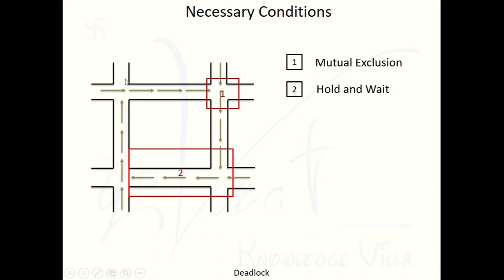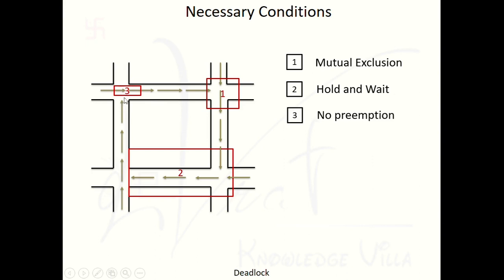For the third case — suppose traffic police arrive and stop a vehicle before it reaches the junction; only then will the junction be free. Otherwise, no one can stop the vehicle. So our third case is no preemption — we can't stop any vehicle forcefully. Only when traffic police arrive can they stop a car. Preempt means to stop anything. No one is able to preempt this junction or stop these vehicles, which is why we are not going to solve the traffic jam.